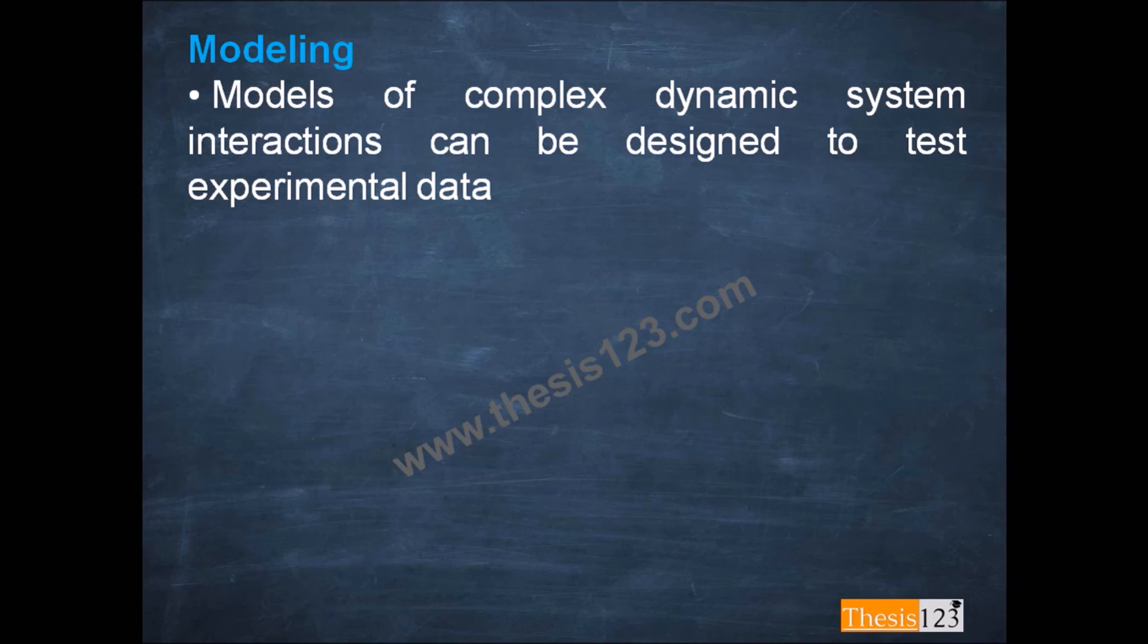in this world there are static systems and dynamic systems available. Static system means it has a stable position. And dynamic system means which can rotate or be in movable positions. Or dimensions can be changed within these dynamic systems. That can be designed to test experimental data.